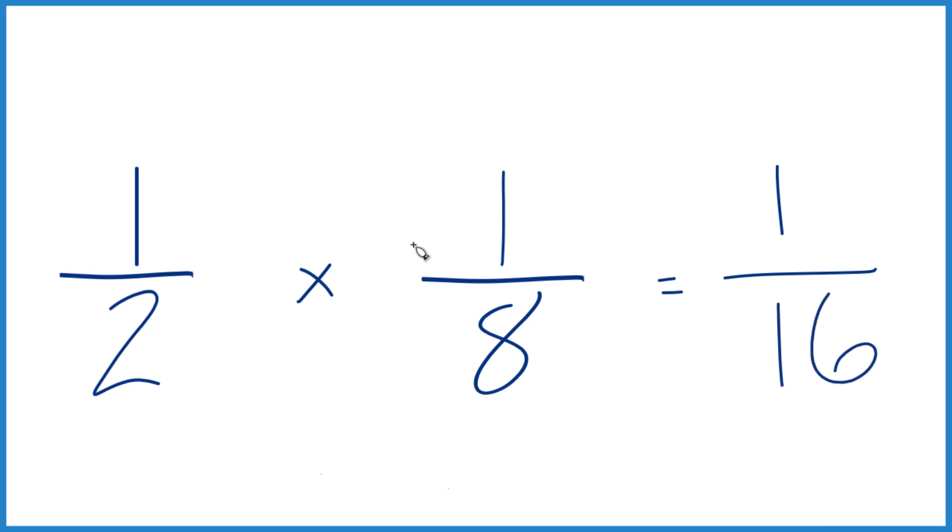So we end up with one-half times one-eighth, that's one-sixteenth. The key is, when you're multiplying fractions, you can just multiply the numerators and then the denominators. These don't have to be the same.